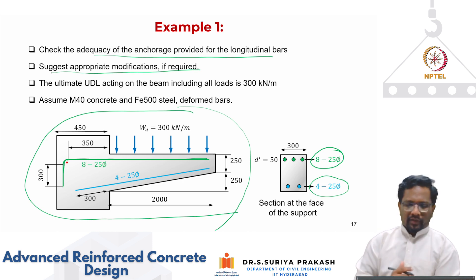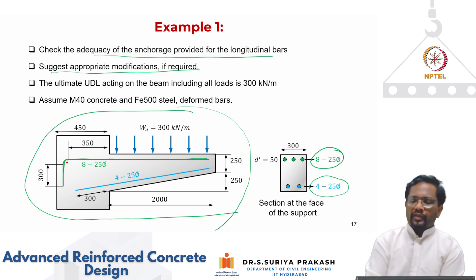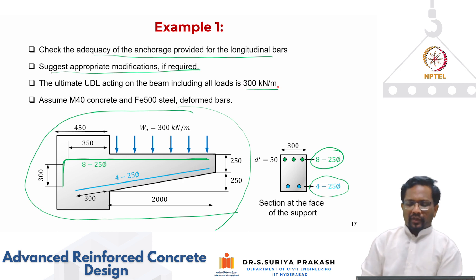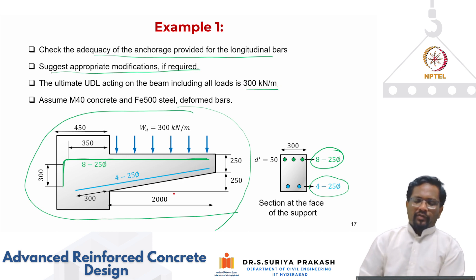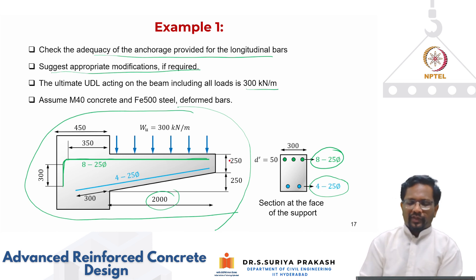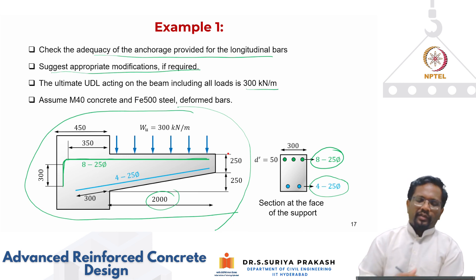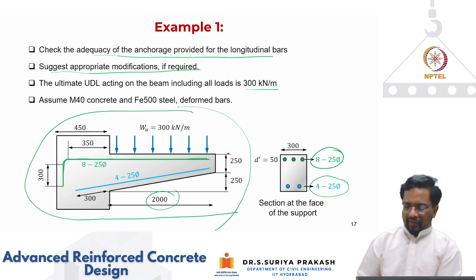The total load acting on the beam including dead load and live load is 300 kilonewton per meter. The cantilever length from the edge of the column is 2 meters. The section is tapered, varying in depth from 250 mm at the free end to 500 mm at the fixed end. Now let us check whether the anchorage length provided is adequate or not.